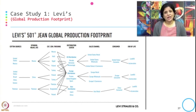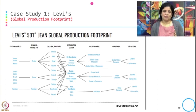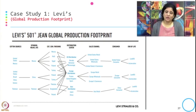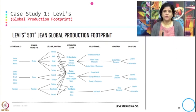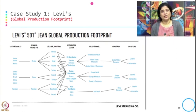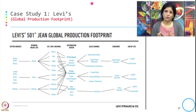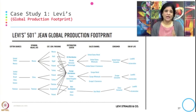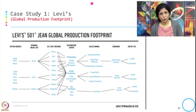The key idea is that sourcing is happening in one place, manufacturing in another place, and distribution and consumers are all over the globe. Accordingly, the footprint is also spread across the globe based on the production footprint — specifically for the product Levi's 501.